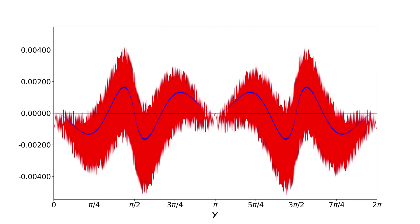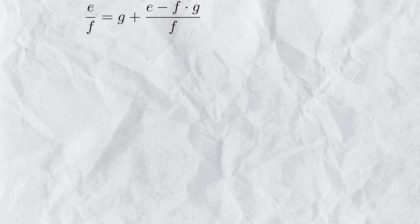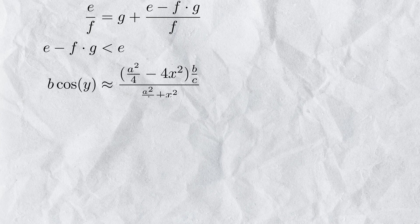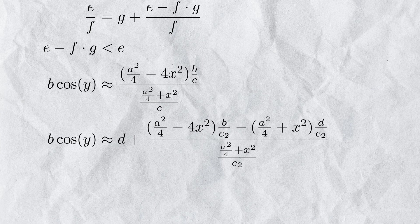There are other ways to keep the numerator small though. For example, if we want to divide some number E by another number F, we can do this division with a smaller numerator if we have an estimate for the result G. E minus F times G is a lot smaller than E. We can apply the same principle to our previous formula. We get this, where D represents our estimate.